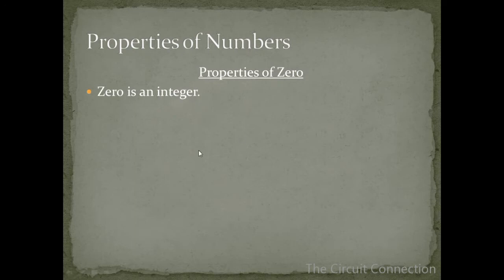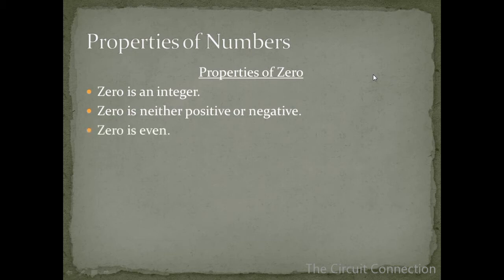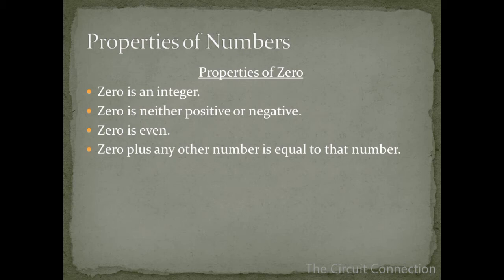Properties of 0. 0 is an integer. 0 is neither positive or negative. 0 is even. 0 plus any other number is equal to that number. 0 multiplied by any other number is equal to 0.